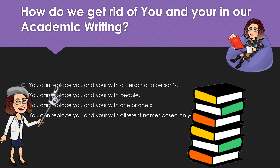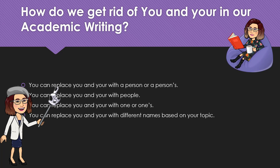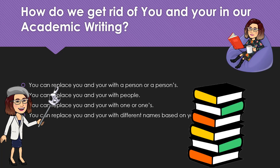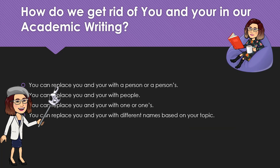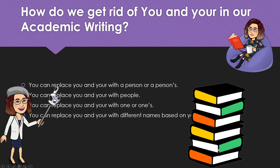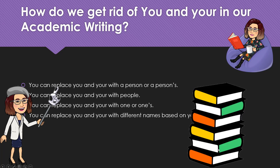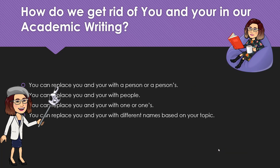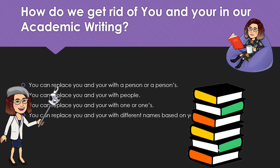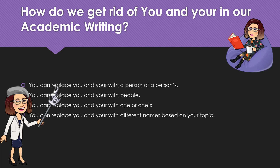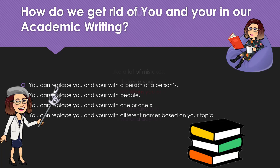How do we get rid of you and your in our academic writing? You can replace you and your with a person or people, one or ones, or with different names based on your topic.